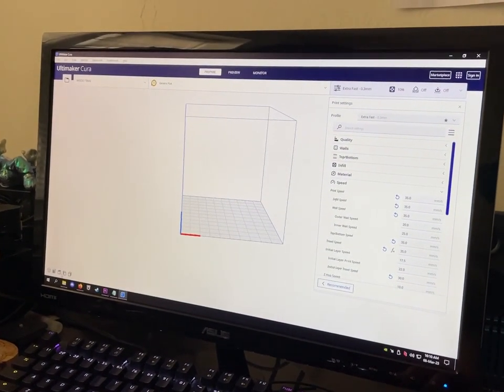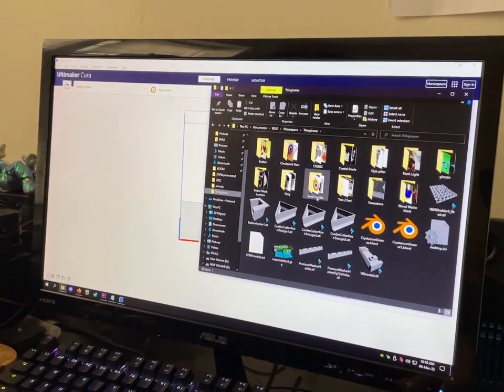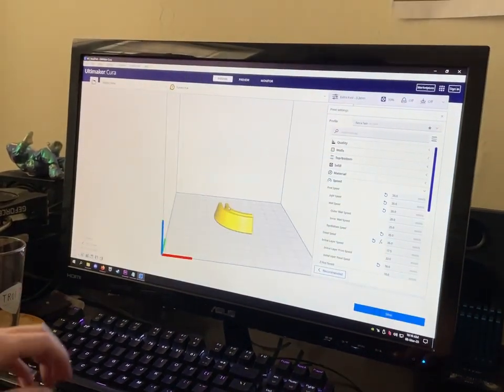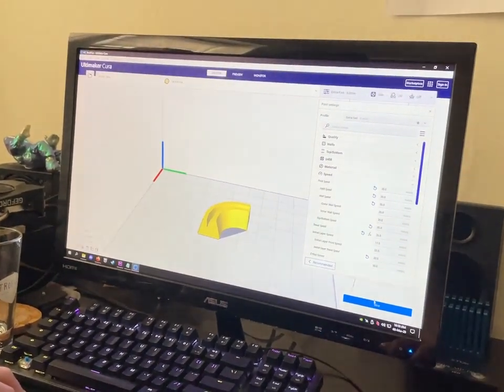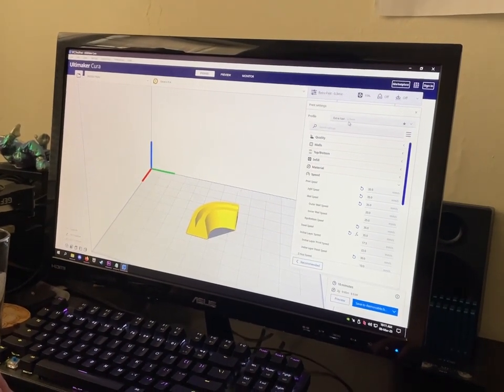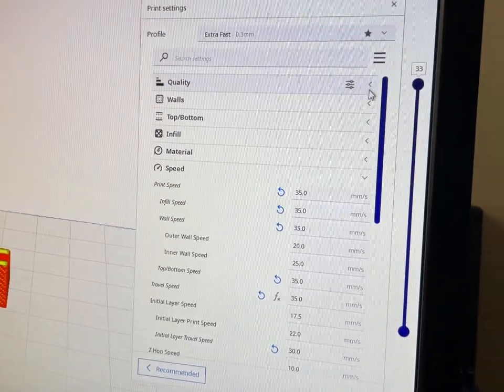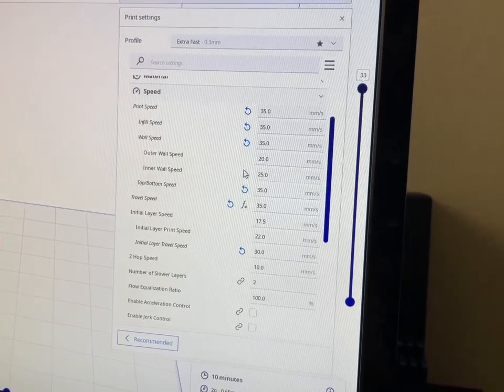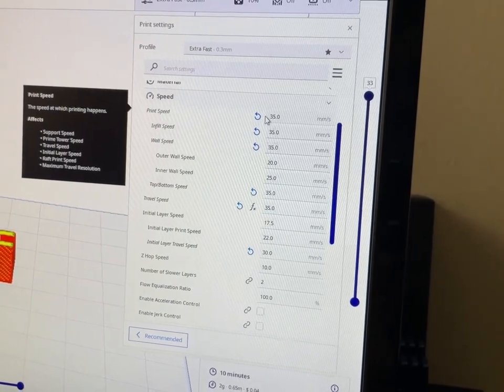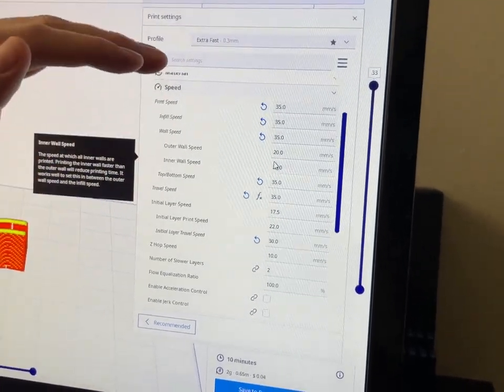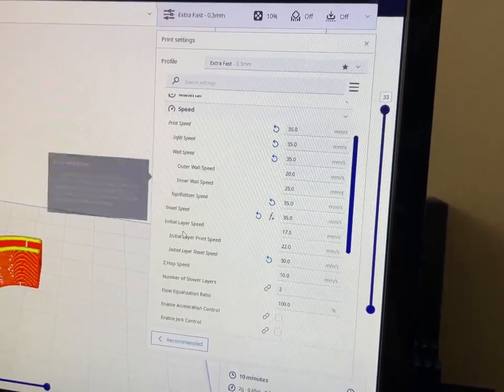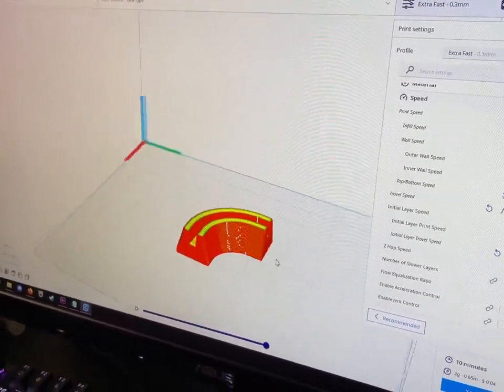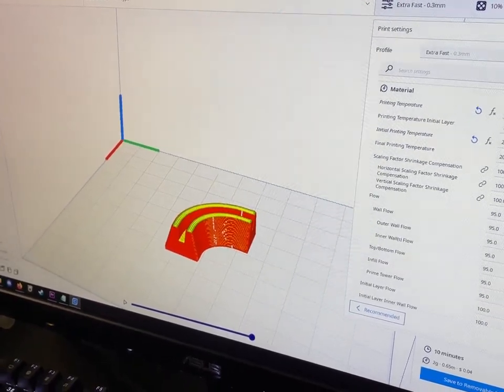So I loaded the custom Cura profile and I have this along with everything else on my Thingiverse account. In order to slice it properly, I went with 0.3 millimeter layer height. For speed, I put everything at 35 or 30. I've been experimenting with 35, but I did these at 30 millimeters per second. I just brought all the speeds down because they were going too fast, and it's really helped a lot.